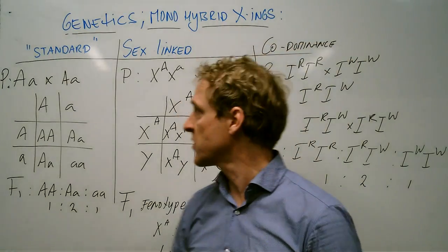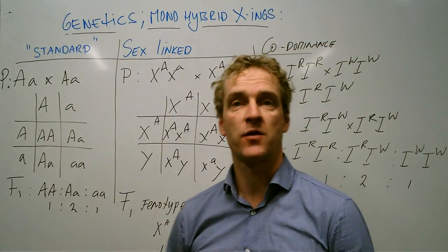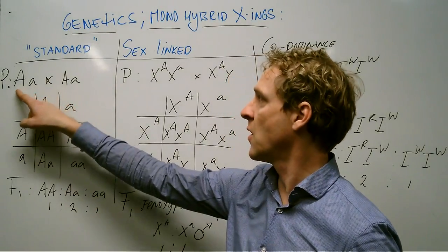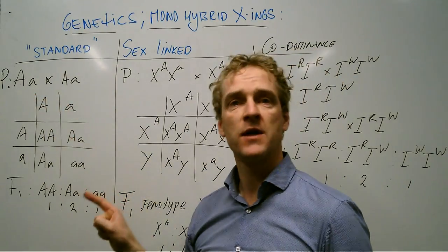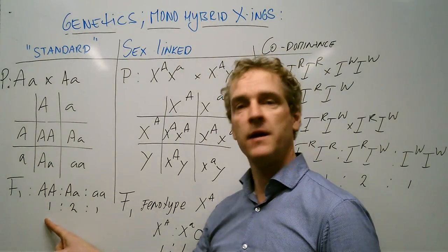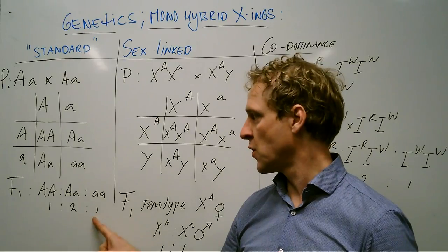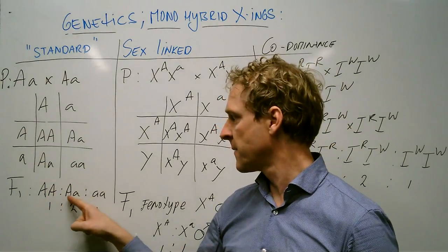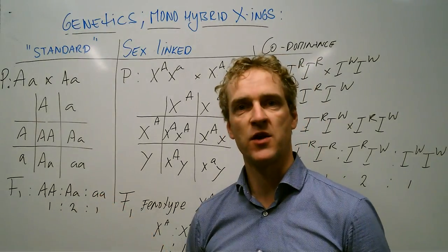First is our standard monohybrid crossing. For example, I have two heterozygous individuals crossing with each other. So I'll put one individual on this side, I'll put the other one on that side. I'll get an F1 in a ratio of 1 to 2 to 1 in homozygous dominant, heterozygous and homozygous recessive.